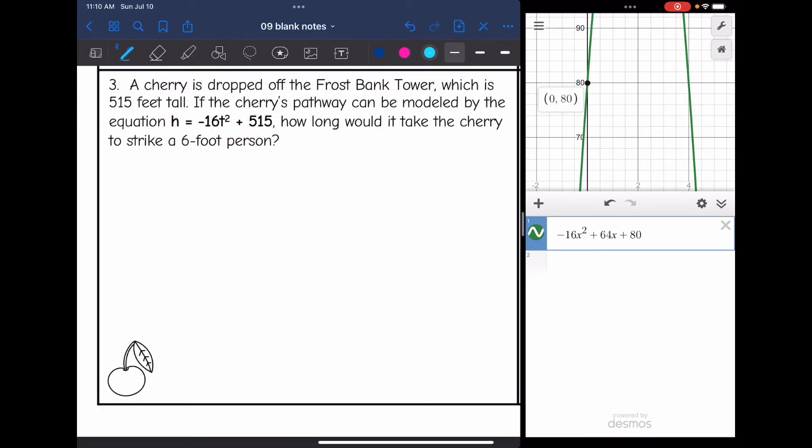A cherry is dropped off the Frostbank Tower, which is 515 feet tall. If the cherry's pathway can be modeled by the equation h = -16t² + 515, how long would it take the cherry to strike a six-foot person? They are asking when is the height going to be 6 feet?